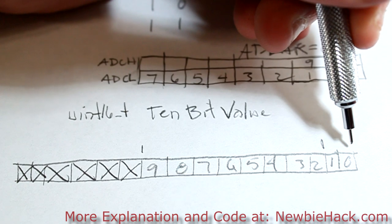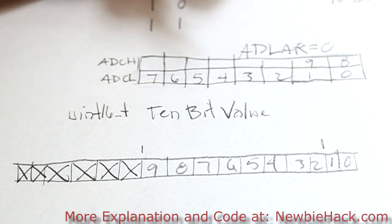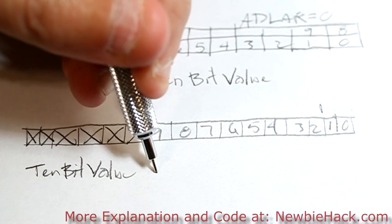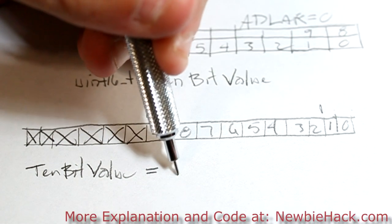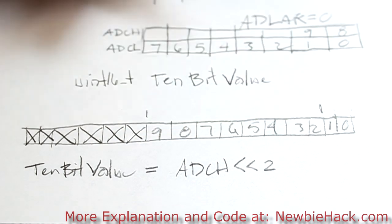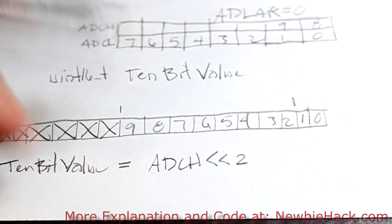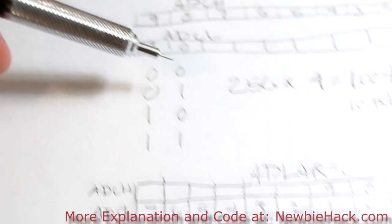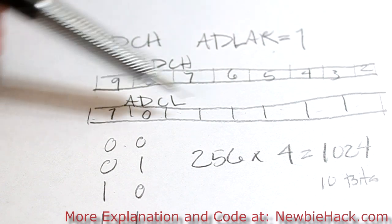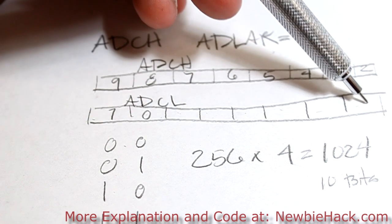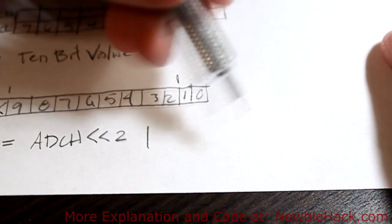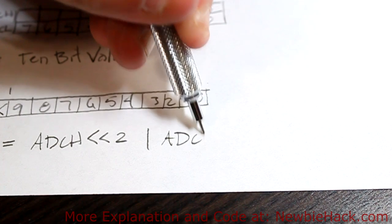We can see that the portion that the ADCH resides is in this location of the 16-bit number. So we can already see that it's shifted to the left two spaces. So our 10-bit value first will equal ADCH, and we're going to shift it to the left two spaces. And that's all we need to do for the ADCH. Then we're going to OR the ADCL. This is the ADCL right here. And it's already shifted to the left. How many spaces? 1, 2, 3, 4, 5, 6 spaces. So all we need to do is say ADCL and then shift it to the right six spaces.